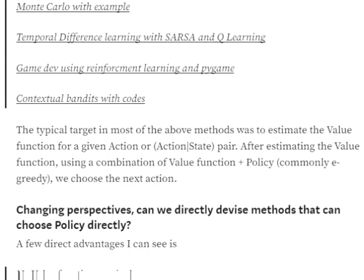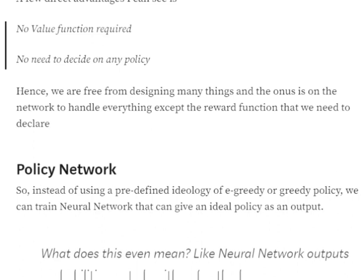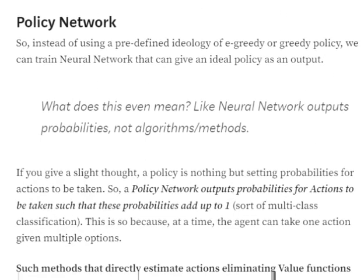In policy gradient methods, what we are trying to achieve is: can we directly devise methods that choose a policy for us? A key advantage is that no value function would be required and no need to decide over any policy manually. By choosing a policy, I mean calculating the probabilities of actions directly rather than estimating over value functions. A policy network is a neural network that takes the state and gives you probabilities for the possible actions — it is essentially a multi-class problem where the outputs add up to one.